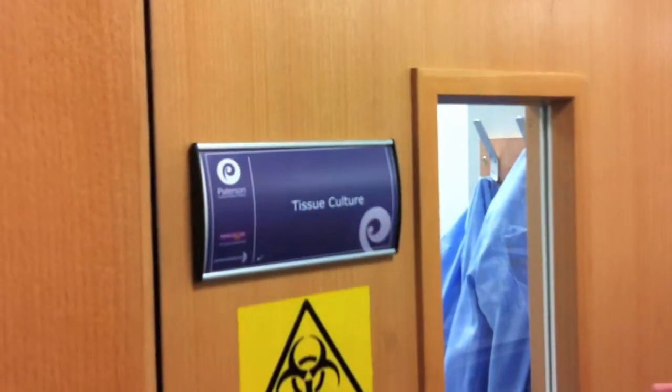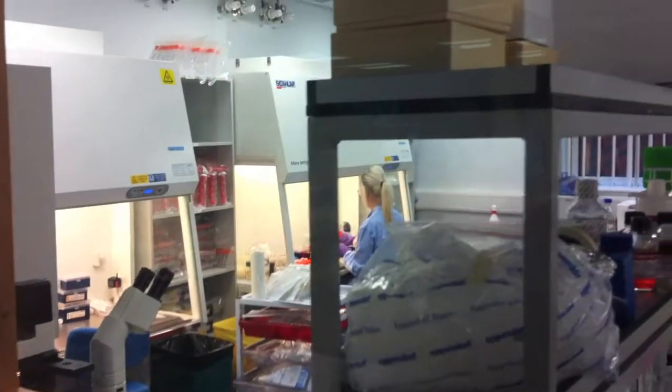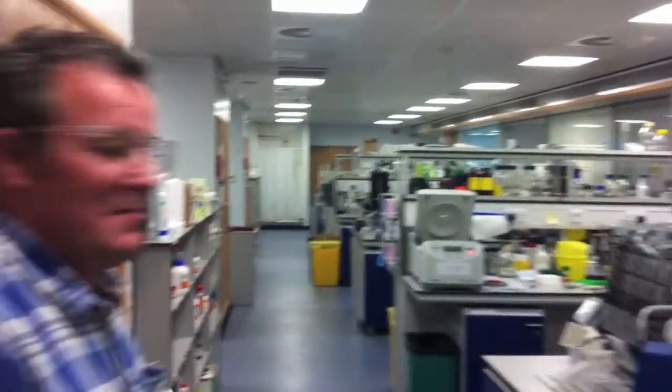If we found specific inhibitors at that level, we'd probably do—I'm not going to go in there, but this is where we would do the tissue culture. You might have a better view, so you can see Gemma working at a tissue culture hood. She'll be working with cancer cell lines, again adding the compounds to them and making sure that we see a biological effect.